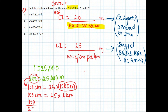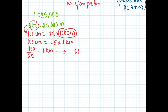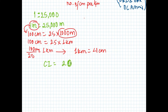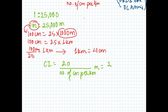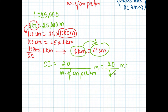Taking that, 25 here: one kilometer equals 100 divided by 25, which shows one kilometer equals 4 centimeters. So our formula is CI equals 20 by number of centimeters per kilometer. That is 20 divided by 4.